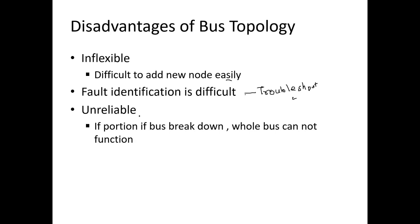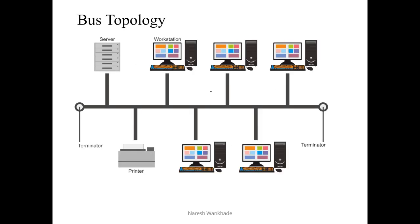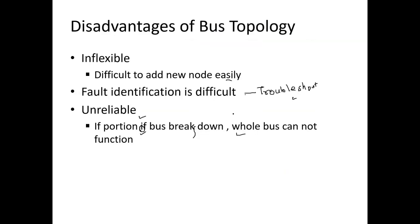Next, bus topology is unreliable. If any portion of the bus breaks down then the entire bus cannot function. You can see that if the bus topology breaks at any point, the entire network will collapse. That is why we say there is no reliability as far as the use of bus topology is concerned. We stop here — thank you for watching.